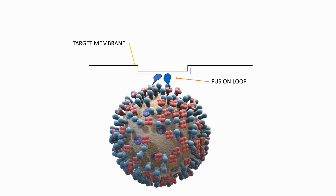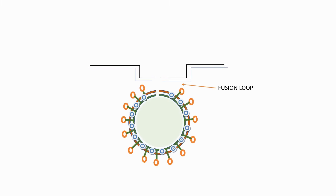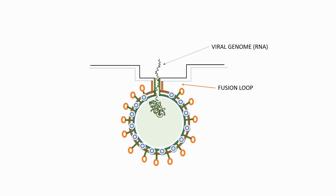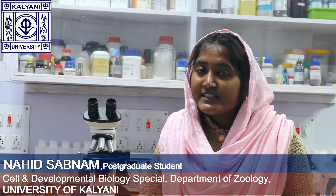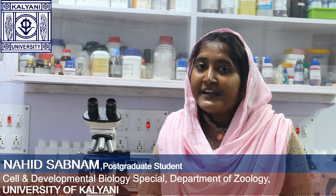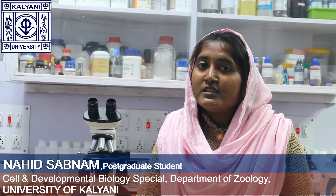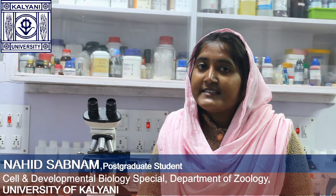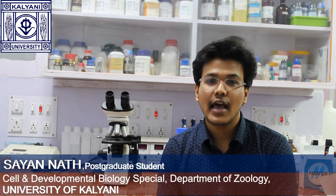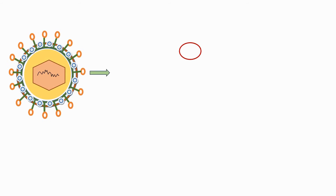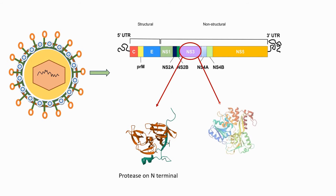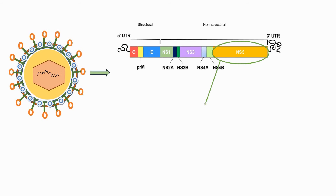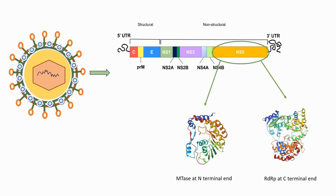The structural protein capsid guards the dengue viral genome from the environment and transports the genome into the host cell. The envelope protein binds with the host cell receptor, and the membrane protein fuses the viral and host cell membranes. Among the 7 non-structural proteins, the largest is NS5 and the second largest is NS3. NS3 has an N-terminal domain with proteolytic activity and a C-terminal domain with helicase activity. NS5 also has two domains: methyltransferase at the N-terminal and RNA-dependent RNA polymerase (RdRp) at the C-terminal end.